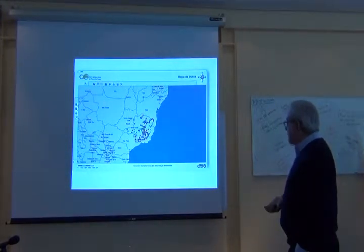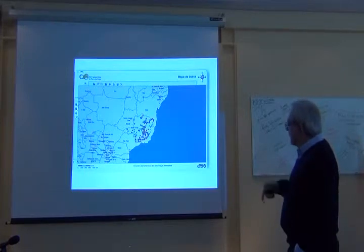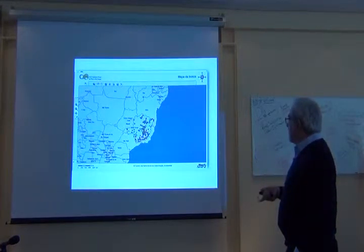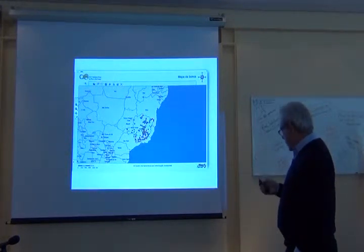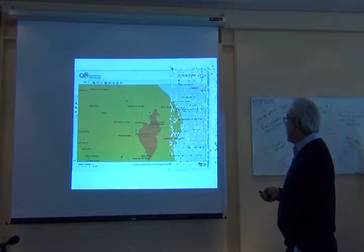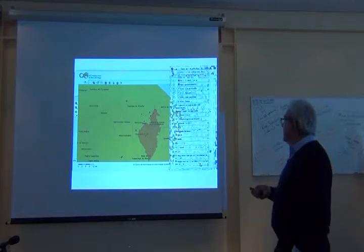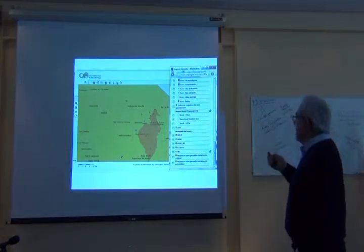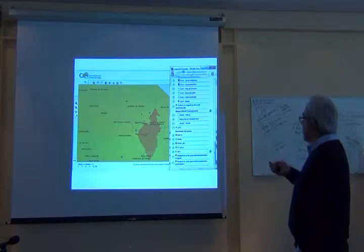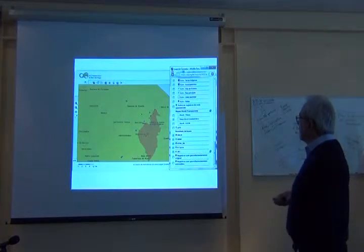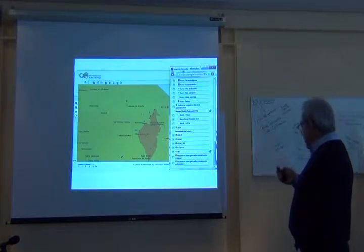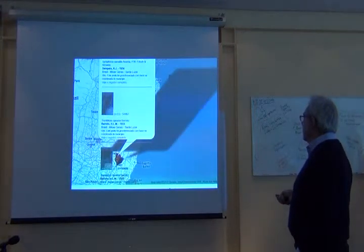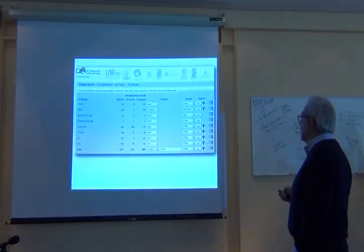Here you can query all the samples available in this herbarium that were collected in Minas Gerais state. You can also add layers integrated from the Brazilian Ministry of Environment — this is the CREA map — and then you can plot the species data on those layers.